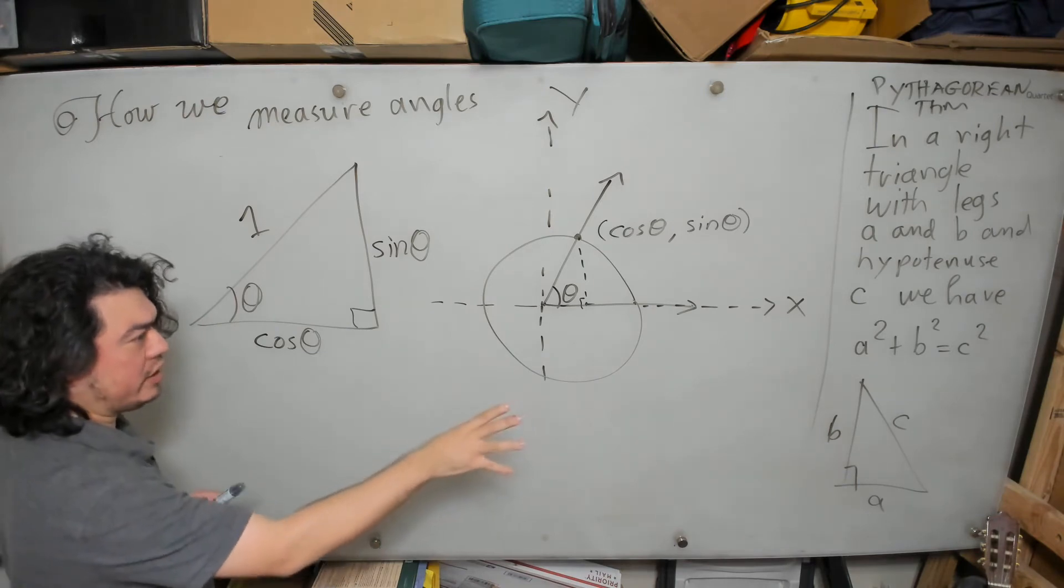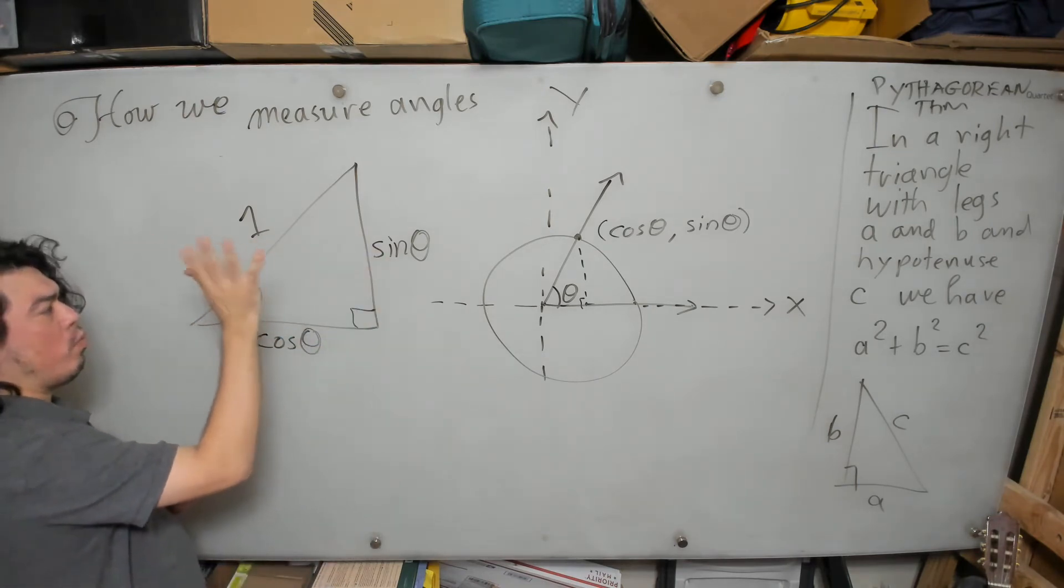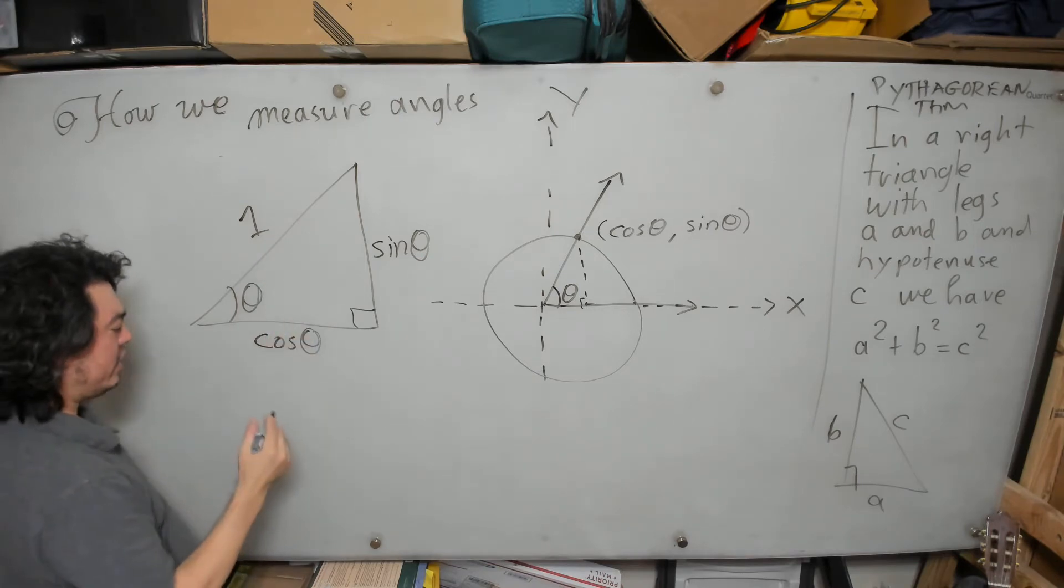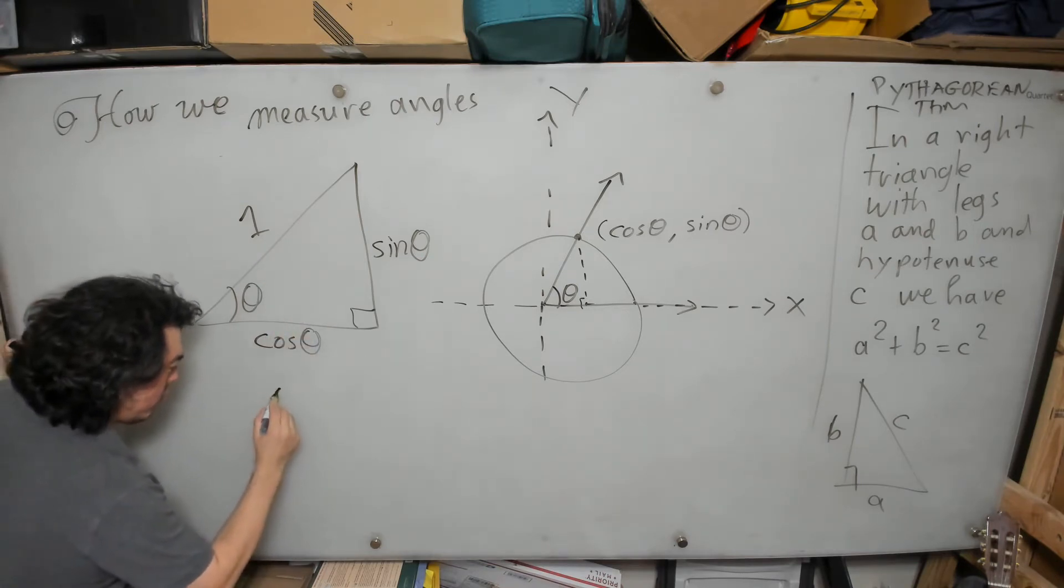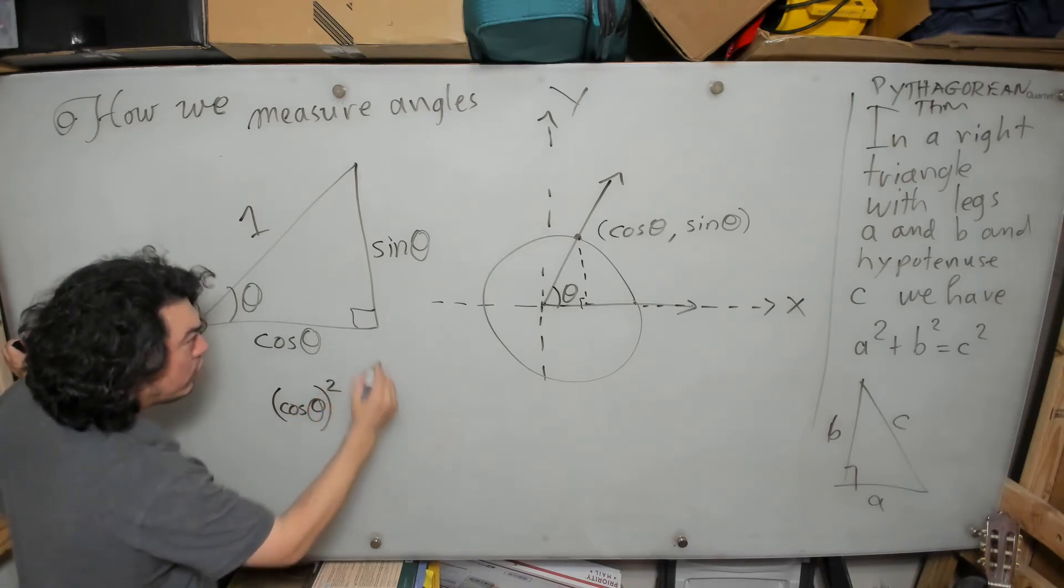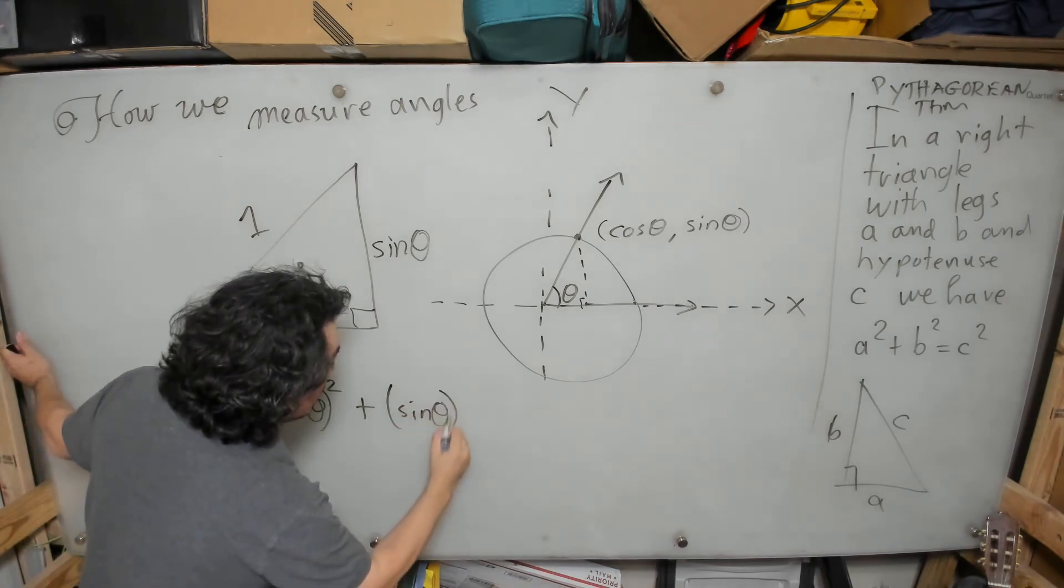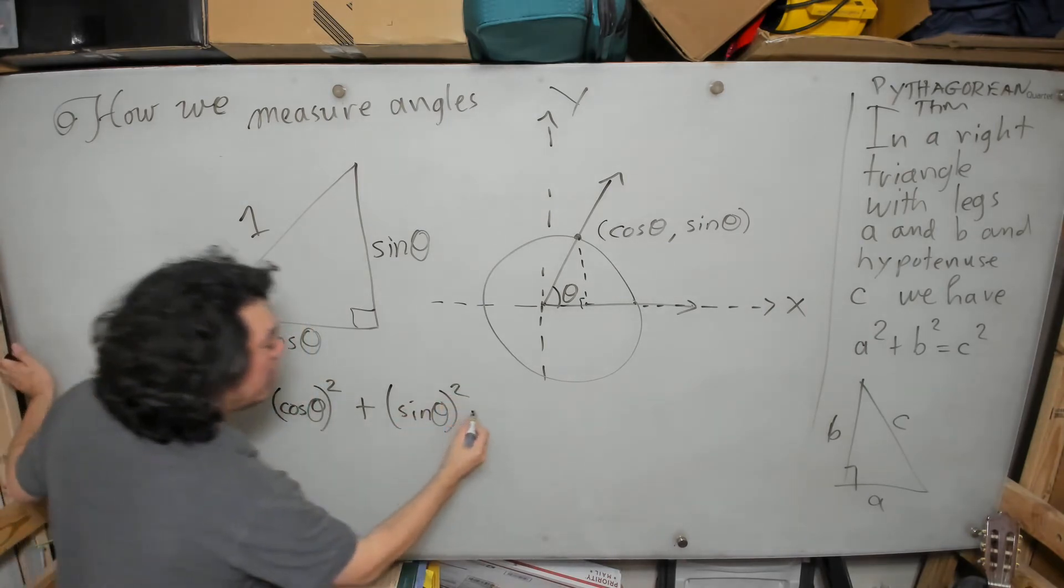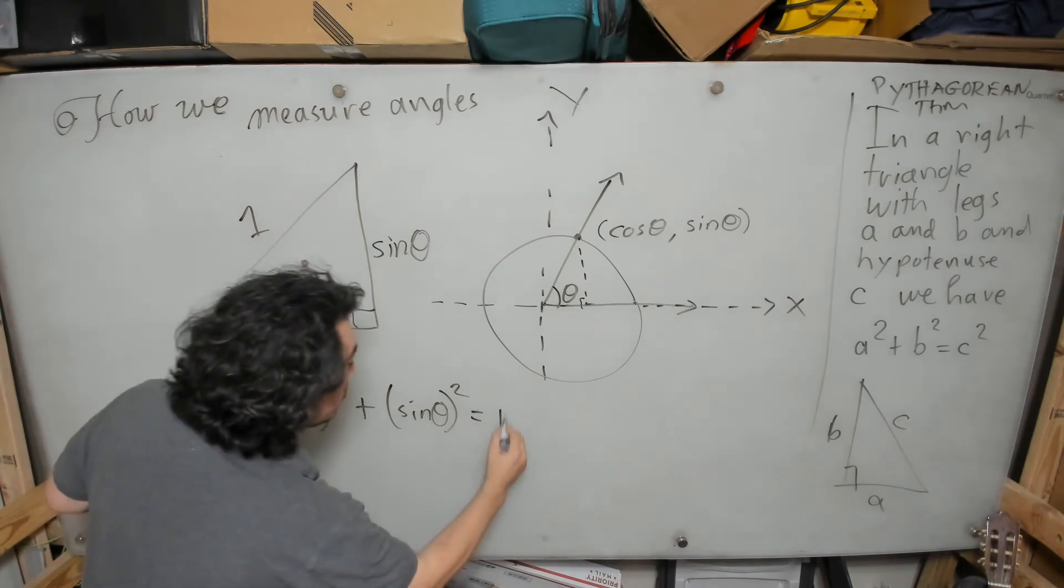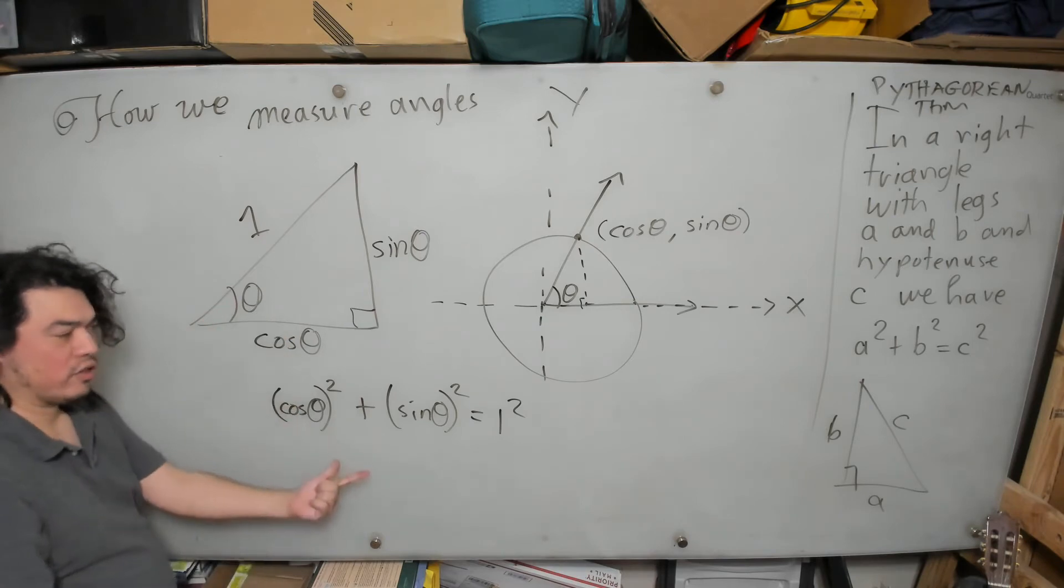So what the Pythagorean theorem tells us, because this is a right triangle, the Pythagorean theorem holds. What it means here is that if I take the cosine of theta and I square that number, and I add it to the square of the sine theta, that will equal one squared.